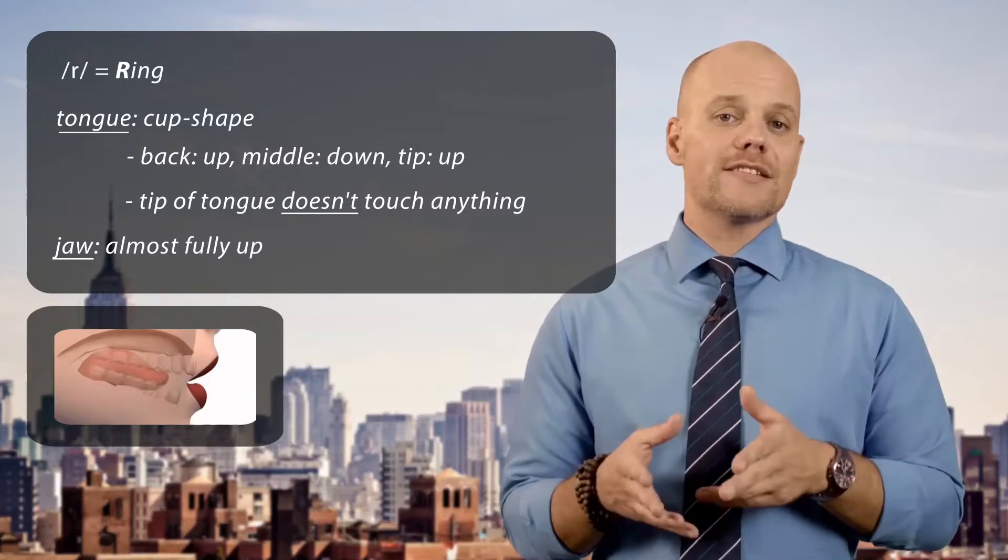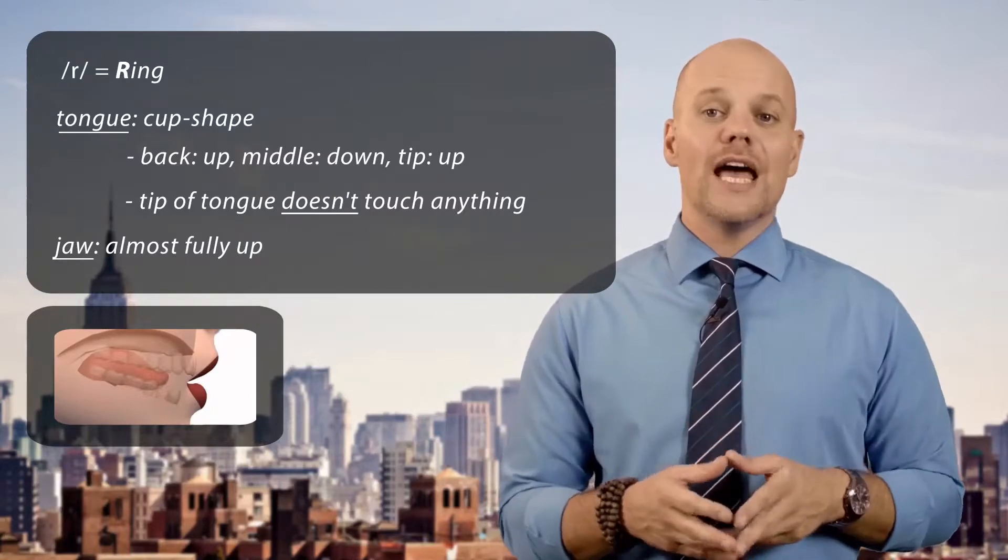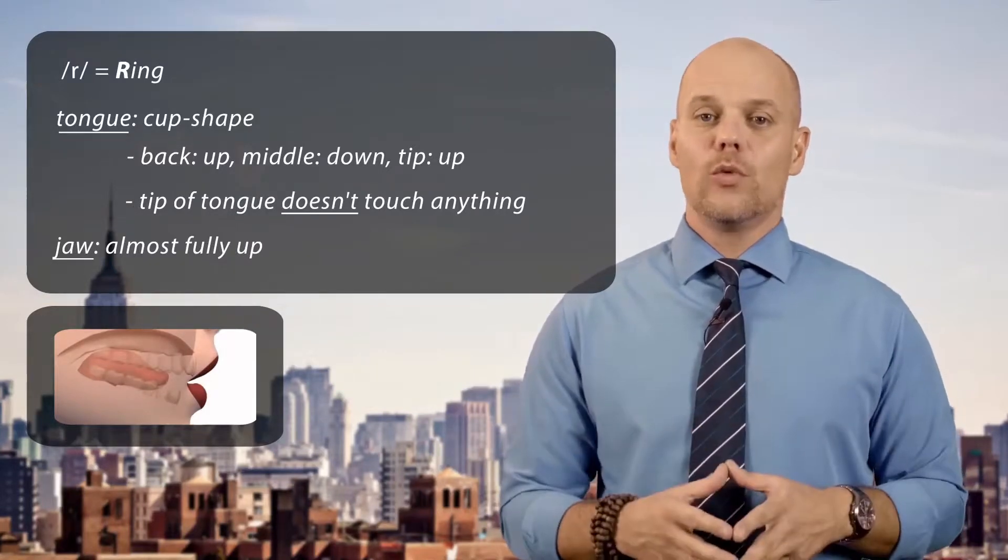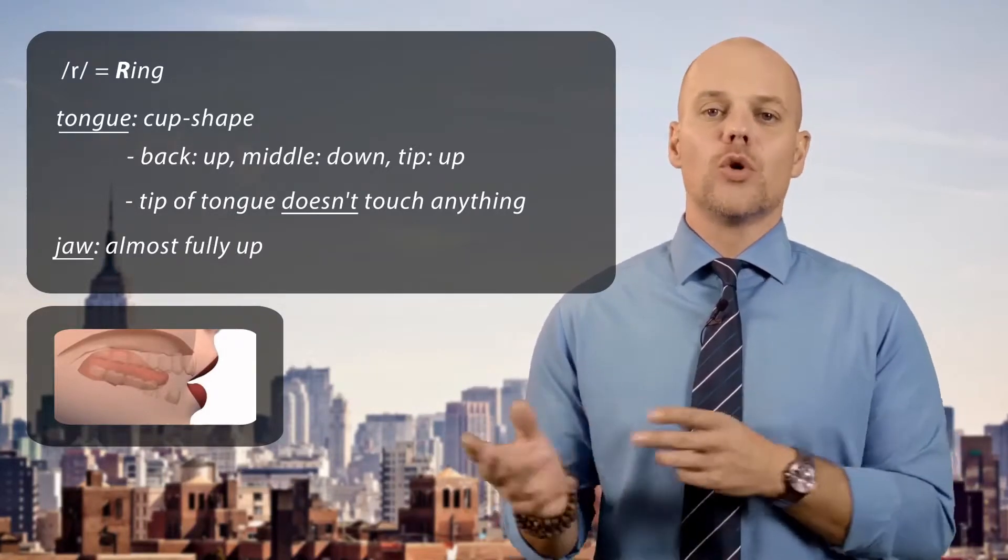First, let's move the R sound to the middle of a word and put it between two vowels. Say the word scoring with a long R. Scoring.